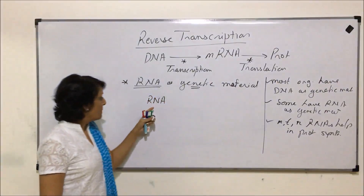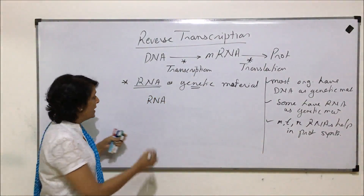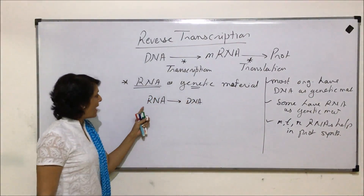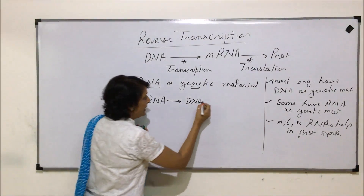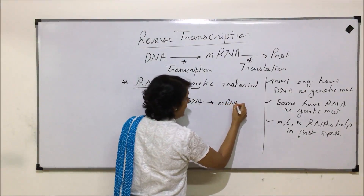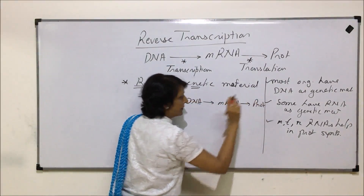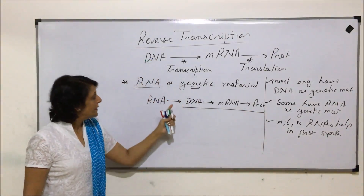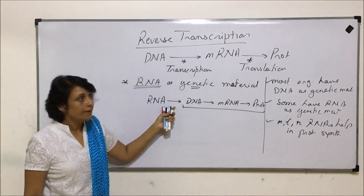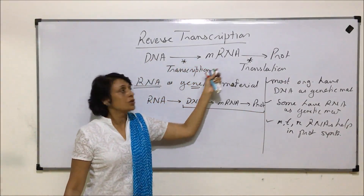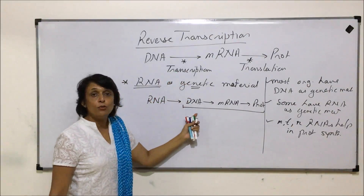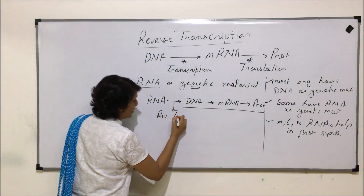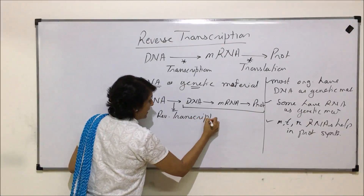Because RNA here is the genetic material, it first forms a DNA from itself. From RNA, a DNA is formed; this DNA then forms mRNA, and mRNA helps in protein synthesis. DNA to mRNA is the normal central dogma process called transcription, but here RNA to DNA means we are going backwards — this step is known as reverse transcription.